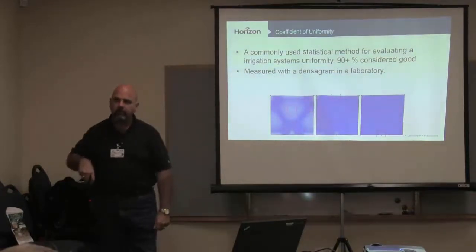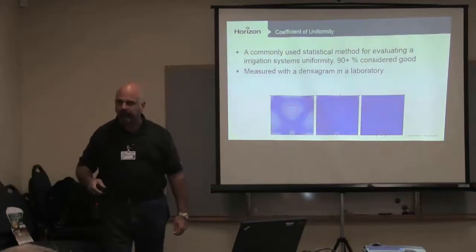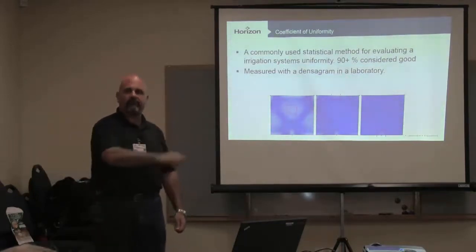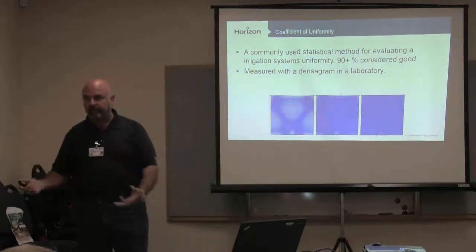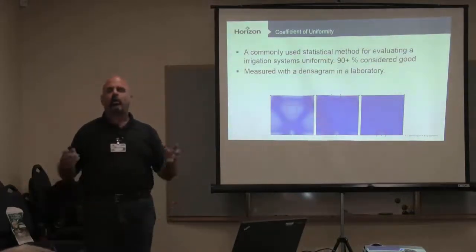And this quarter has to be a 1 gallon per minute nozzle. They all say they're matched precipitation rate, but you've got to change the nozzles. They can't all be a number 7, let alone a number 10 nozzle. Number 10 nozzle puts out about 10 gallons a minute.